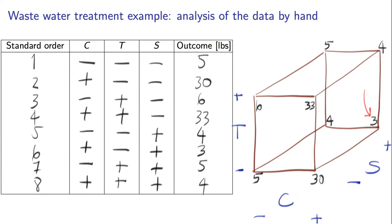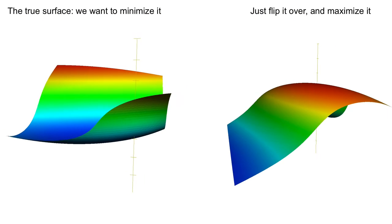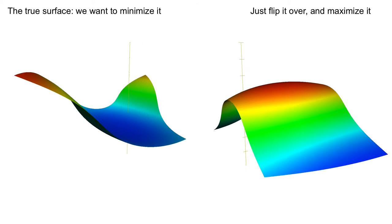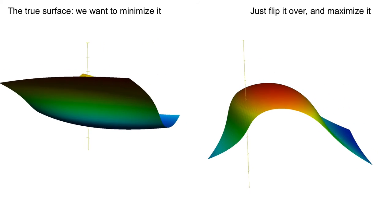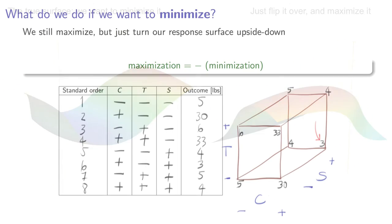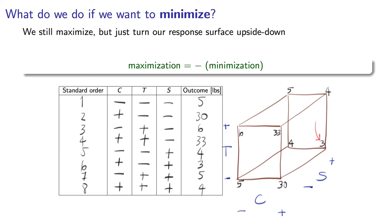In this course, all our examples will be for maximizing. But minimizing is just the opposite of maximizing. In fact, those with a background in optimization theory will know that maximization is just the negative of minimization. For example, in the wastewater problem, if we try to maximize the negative pollution, that is the same as minimizing pollution.